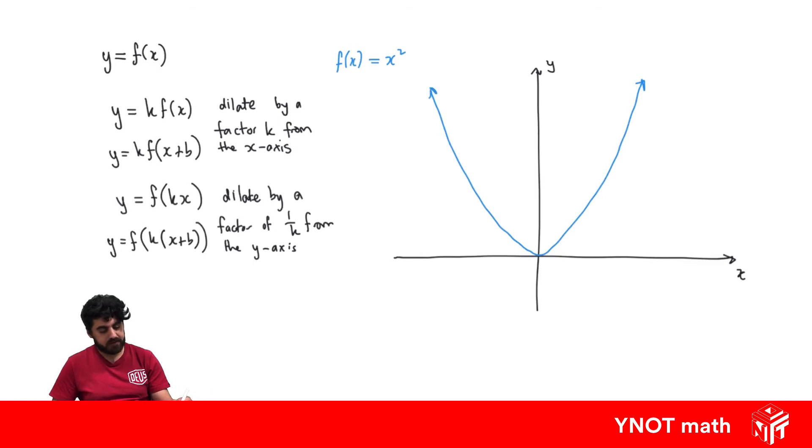Now let's look at our first case of dilation where we multiply the whole function by a factor of k. So let's look at multiplying by a factor of 3. If we take our whole function and multiply by a factor of 3, we get 3x squared.